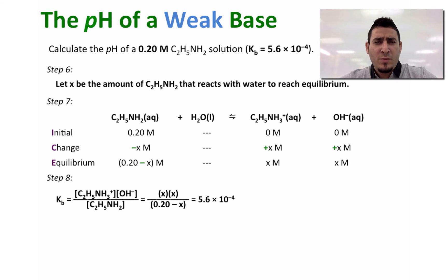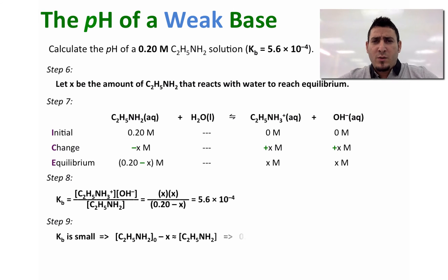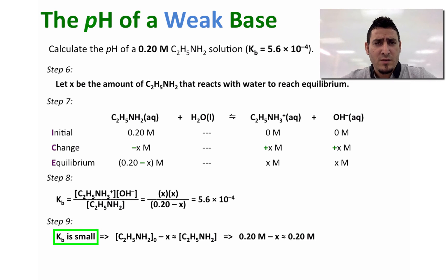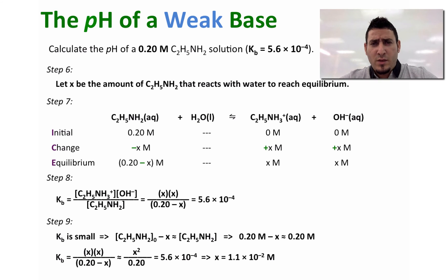In step eight, we replace the equilibrium concentrations in the expression of Kb with their values, giving X times X divided by 0.20 minus X equals 5.6 times 10 to the power minus 4. In step nine, to simplify, since Kb is small, we assume that X is too small compared to the initial concentration of the base and can be neglected. We rewrite the expression as X squared divided by 0.20 equals 5.6 times 10 to the power minus 4.